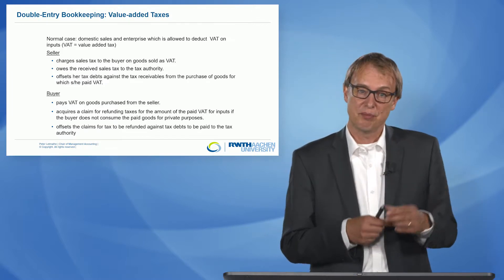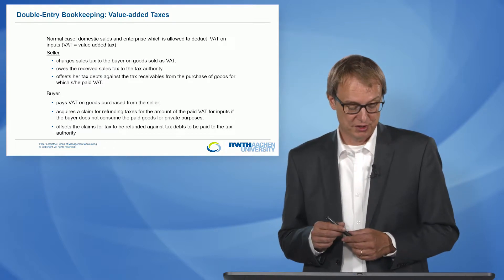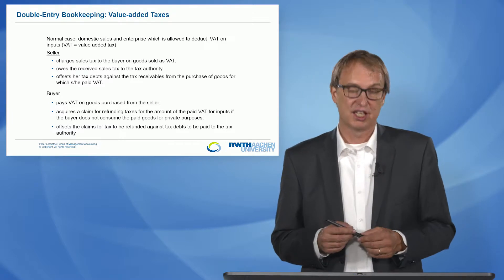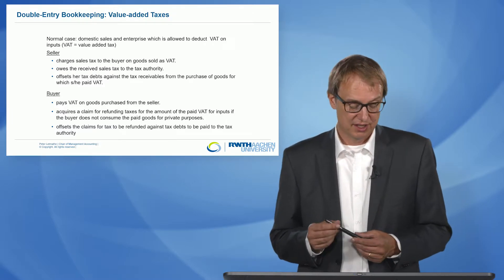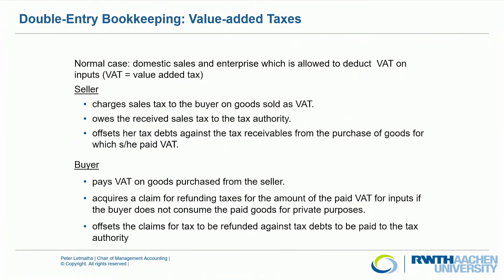On the side of the buyer: first, the buyer pays the value-added taxes on goods purchased from the seller. But if I'm a commercial buyer, I acquire a claim for refunding taxes for the amount of the paid value-added tax on inputs, if the buyer does not consume the paid goods for private purposes. Even if I'm an entrepreneur, if I consume something for private purposes I still have to pay it. Then the buyer offsets the claims for tax to be refunded against tax debts to be paid to the tax authority.